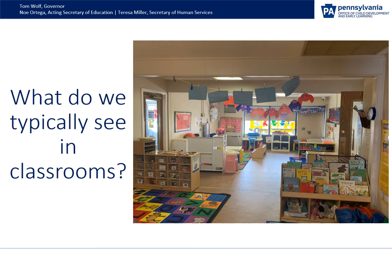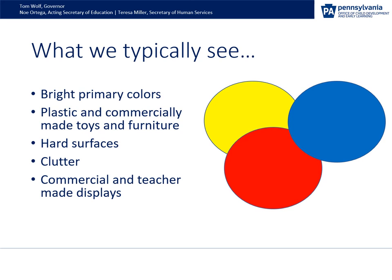Remembering the places you thought of from your childhood, think about how that compares to what children typically see in their classrooms. This is a picture of a classroom we would walk into, and it's a really good classroom. But do we see those elements of nature — the sights, the sounds, the smells outdoors? Here are some things typically seen in classrooms: bright primary colors, plastic and commercially made toys and furniture, hard surfaces, clutter, commercial and teacher-made displays.